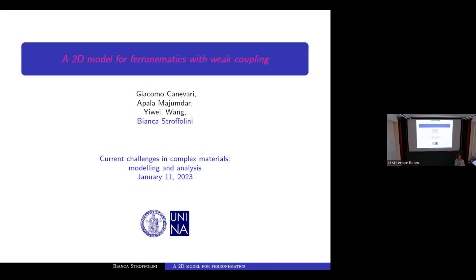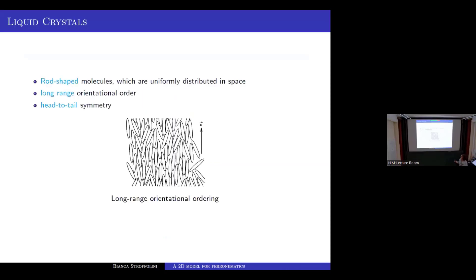This is a 2D model, so in the plane. I will explain what we are going to work on and what this new chart means. The ambient is a liquid crystal — liquid crystals were already discussed, introduced by Giacomo on Monday. There are broad-shaped molecules with long-range orientational order, and N is the director.